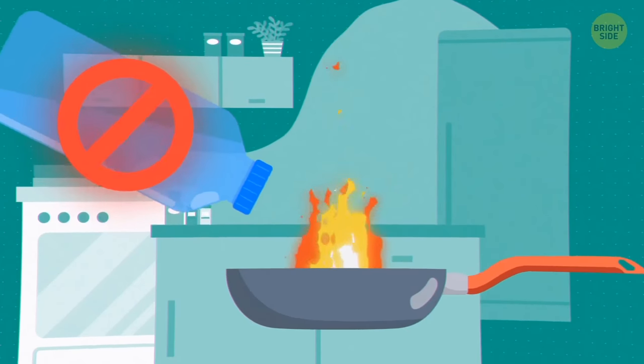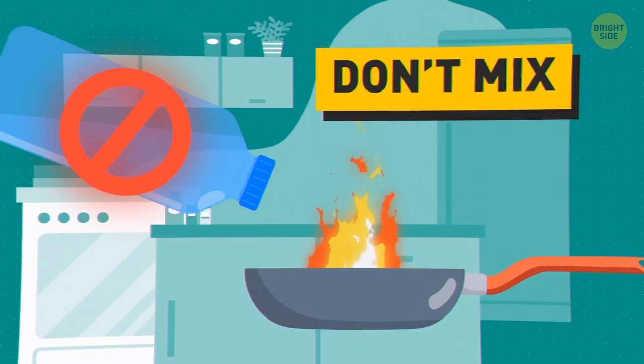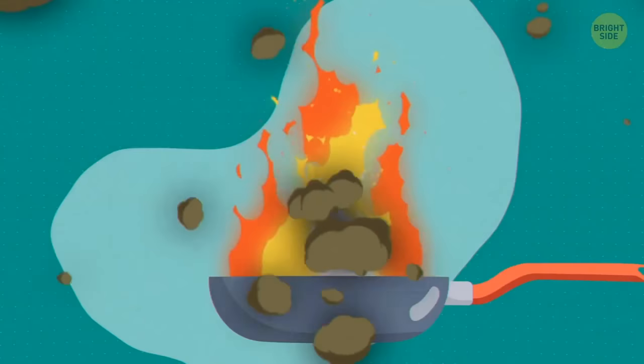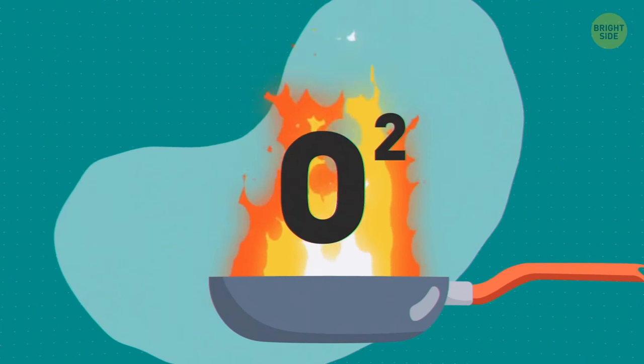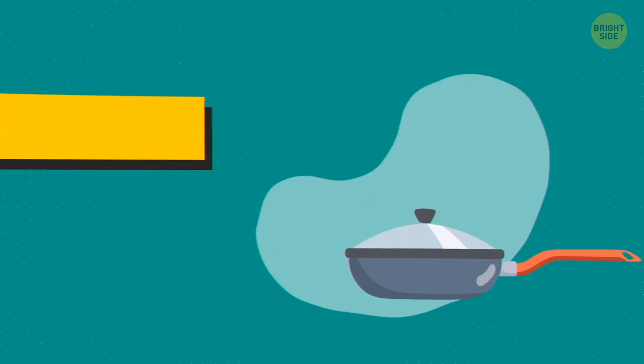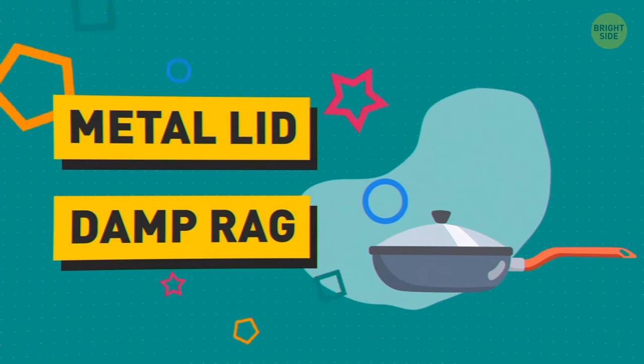Don't use water to extinguish a grease fire. Water and oil don't mix, so it'll only make things worse. You need to smother the fire by cutting off the oxygen. Put a metal lid over it or a damp rag.